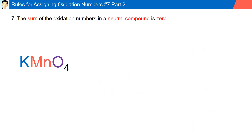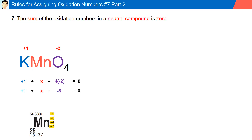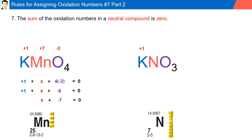Continuing rule number seven — neutral compounds sum to zero. In KMnO₄, potassium has a plus one charge (Group 1), and oxygen is always minus two; with four oxygens, solving for Mn gives an oxidation state of plus seven. In KNO₃, potassium is plus one, oxygen is minus two with three oxygens giving minus six total, so solving for nitrogen gives an oxidation state of plus five.